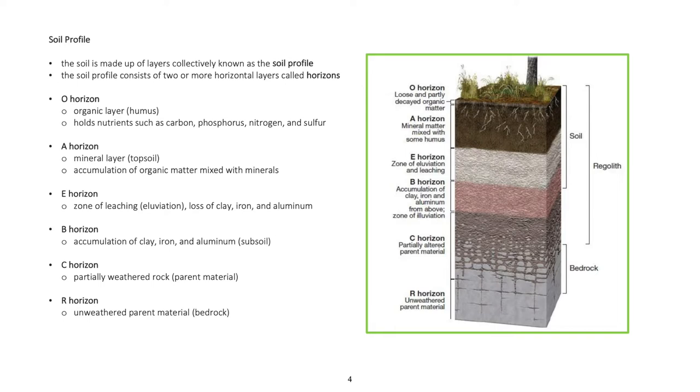E-horizon: zone of leaching, eluviation, loss of clay, iron, and aluminum. B-horizon: accumulation of clay, iron, and aluminum, subsoil. C-horizon: partially weathered rock, parent material. R-horizon: unweathered parent material, bedrock.